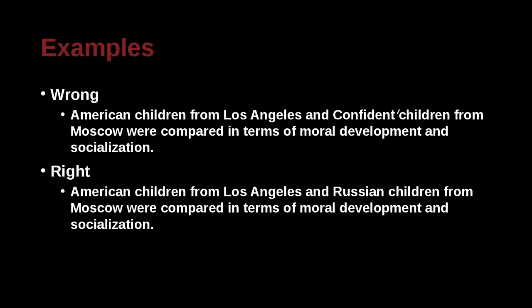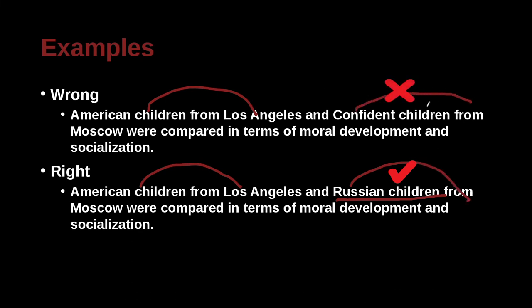American children from Los Angeles and confident children from Moscow were compared in terms of moral development and socialization. The correct version: American children from Los Angeles and Russian children from Moscow. Because we say 'American children,' we should also say 'Russian children.' Using 'confident children' is making some kind of judgment or value assessment, which is odd. That is our list of examples — you can really learn a lot from looking at examples, so give yourself some practice and adapt that to your research.